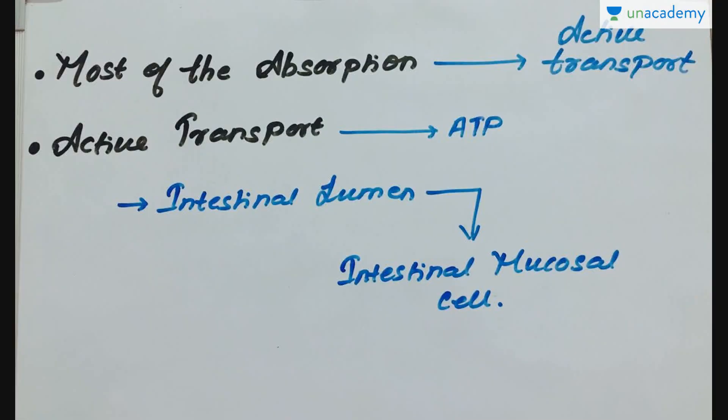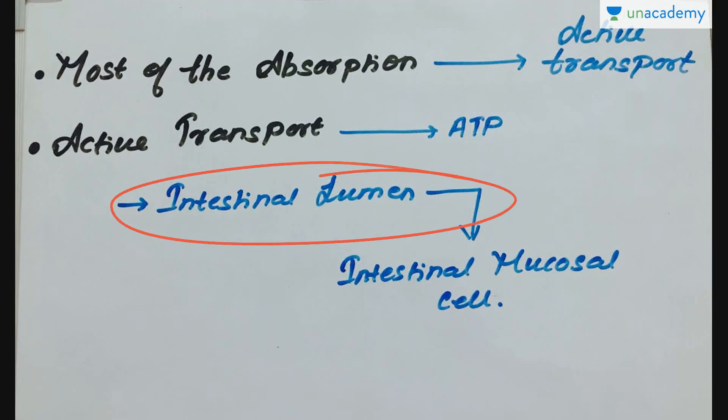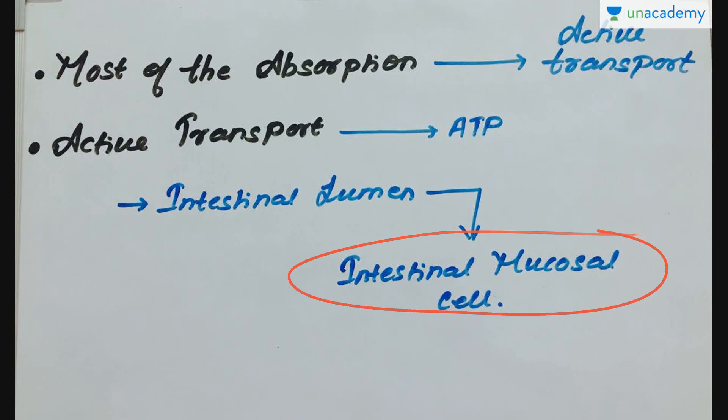Most of the absorption of digested material occurs through active transport. The process of active transport uses ATP to push material from an area with relatively low concentration of small molecules, such as the intestinal lumen, to one with relatively higher concentration, such as the intestinal mucosal cell.